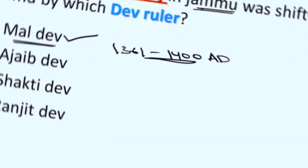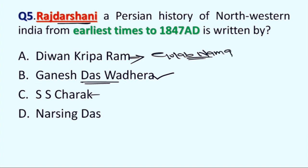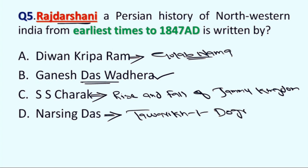Next question is: Raj Darshini, a Persian history of Northwestern India from earliest times to 1847 AD, is written by: Option A: Devan Kriparam, B: Ganesh Das Vadera, C: SS Chark, and D: Narsingh Das. Correct answer is Option B, Ganesh Das Vadera is the author of Raj Darshini. Devan Kriparam is the writer of Gulab Nama. SS Chark is author of Rise and Fall of Jammu Kingdom, and Narsingh Das is author of Tawariki Dogra Desh.